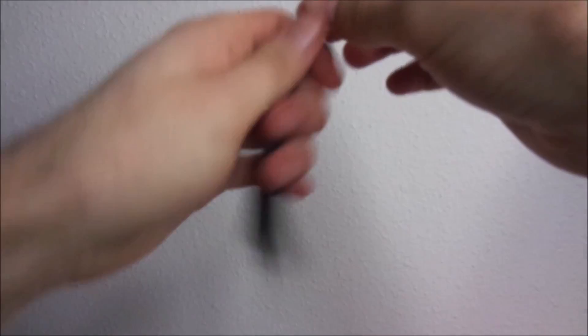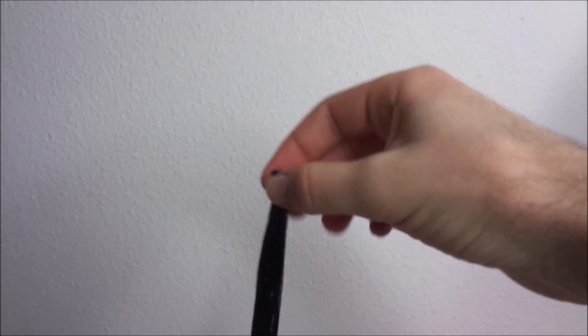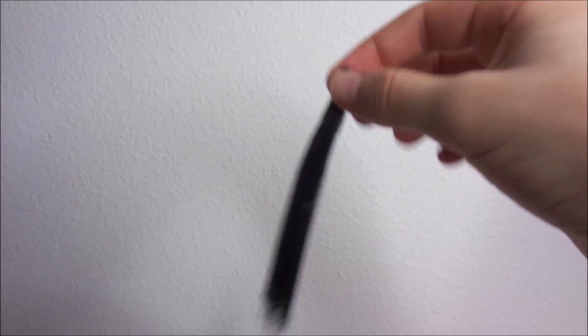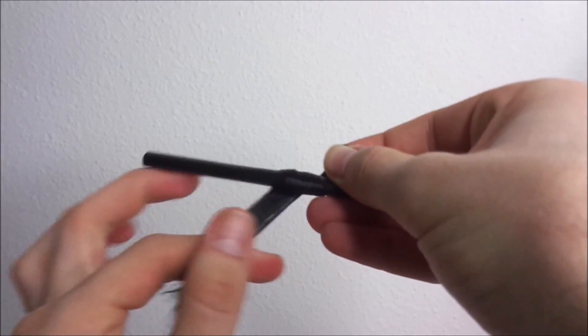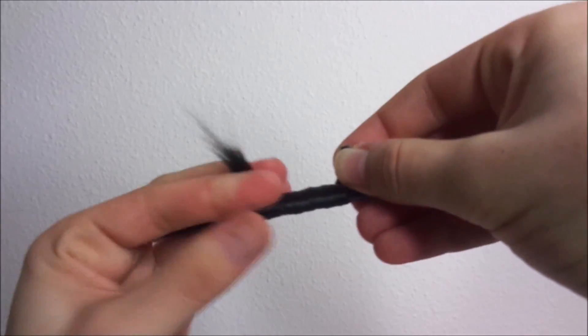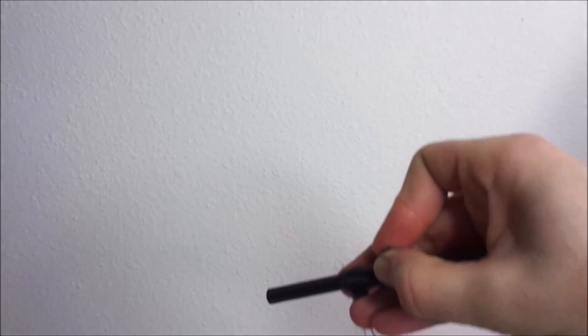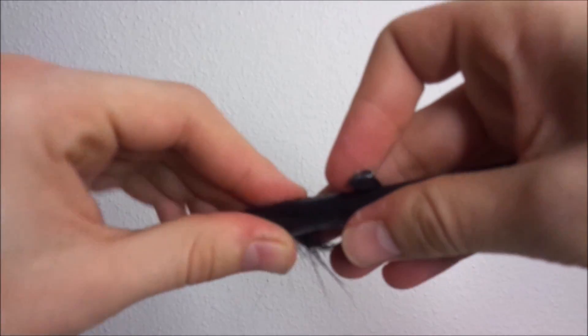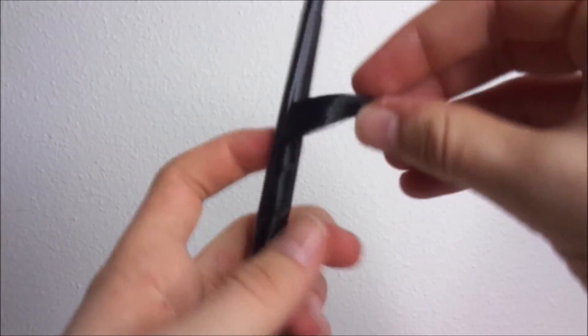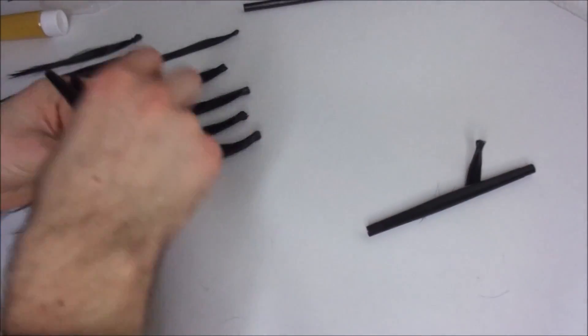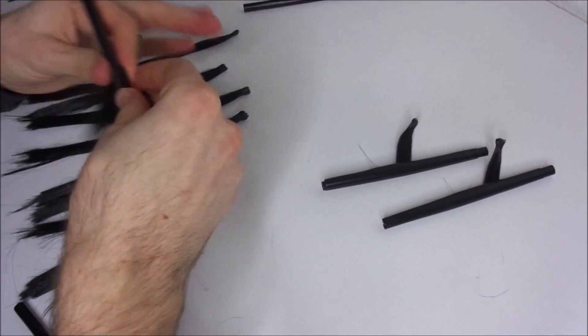Then when all the extension pieces are made, I want to slightly curl them to make it easier to blend them with the rooted doll hair. To do this I wrap the hair around a straw, sliding another straw over it that was cut in half. For this set of extensions I curl them all in the same direction.